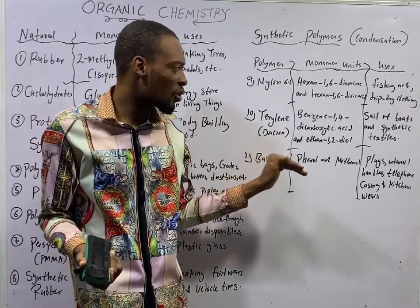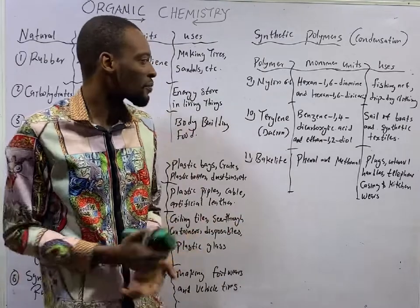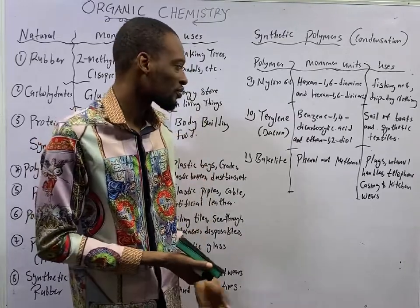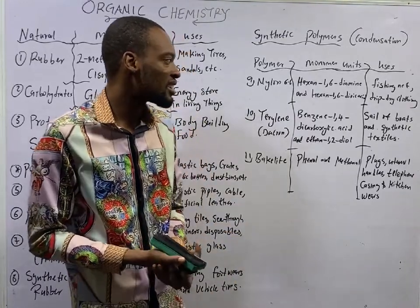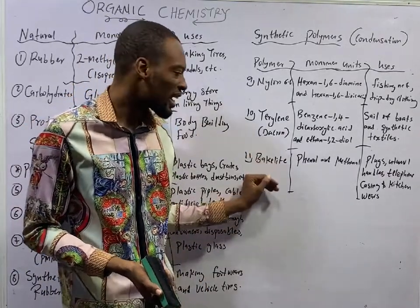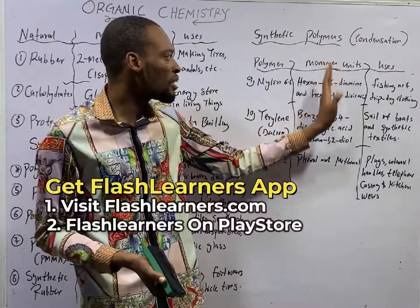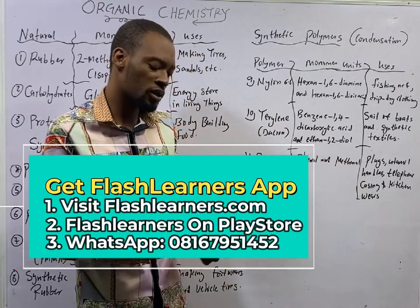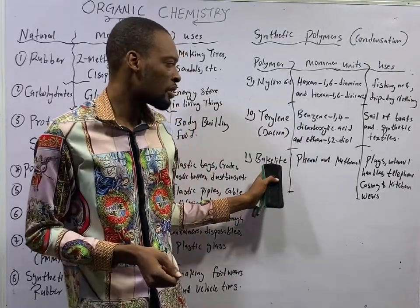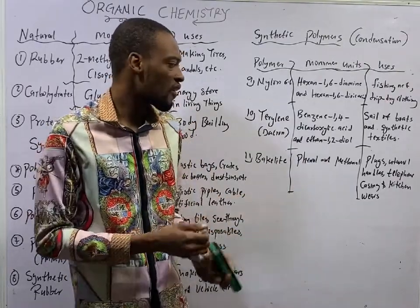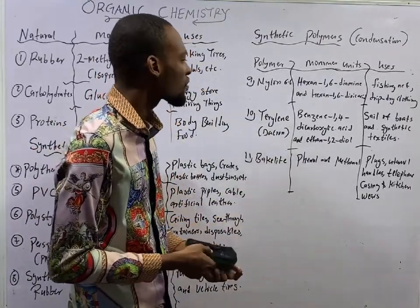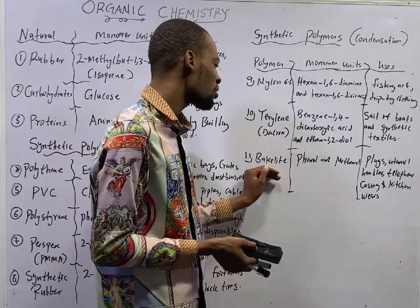Terylene, also referred to as Dacron, is made up of benzene-1,4-dicarboxylic acid and ethane-1,2-diol. It is used in sails and synthetic textiles. Bakelite, also referred to as phenol-methanal, has monomer units of phenol and methanal. It is used to make pot, knife, and pan handles, telephone casings, and kitchenware — it has a very wide application. Bakelite is a synthetic polymer and a condensation polymer.